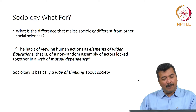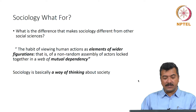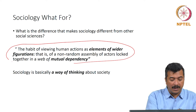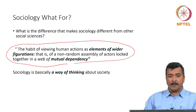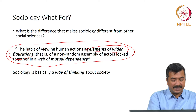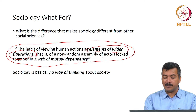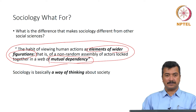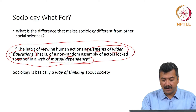Bauman argues that the habit of viewing human actions as elements of wider figurations — that is, of a non-random assembly of actors locked together in a web of mutual dependency — is an extremely important point and is the crux of the sociological perspective. There are two key terms in this section: one is 'elements of wider figuration' and the second is 'mutual dependency.'